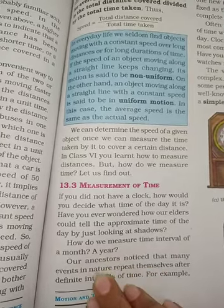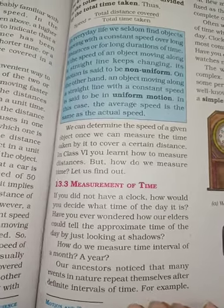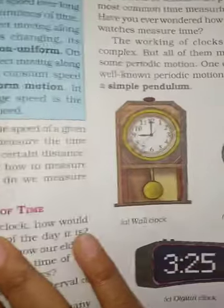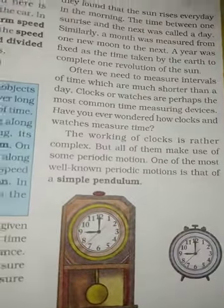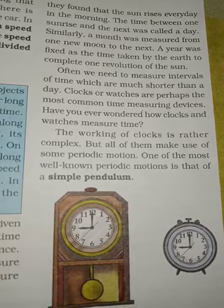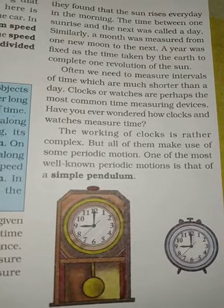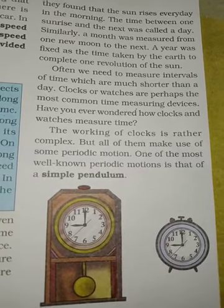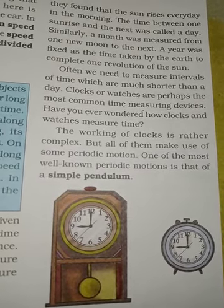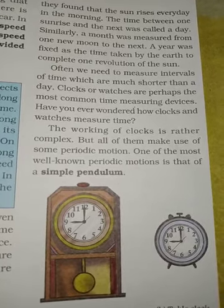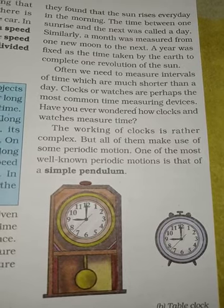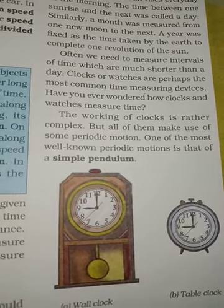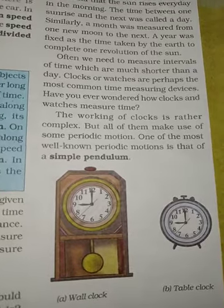Our ancestors noticed that many events in nature repeat themselves at definite intervals of time. For example, they found that the sun rises every day in the morning. The time between one sunrise and the next was called a day. Similarly, a month was measured from one new moon to the next. The year was fixed as the time taken by the earth to complete one revolution around the sun.